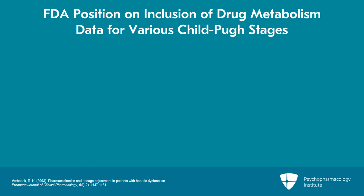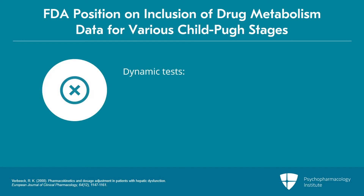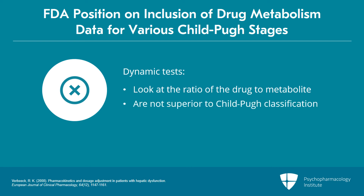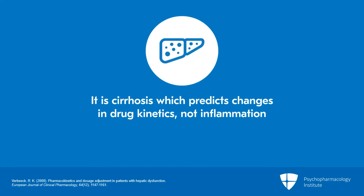There are things done for research purposes only — what we call dynamic tests — where we actually inject people with drugs and look at the ratio of the drug to metabolite. But the FDA said they've looked at those and they're actually not superior to the Child-Pugh classification. It's cirrhosis which predicts changes in drug kinetics, not inflammation.